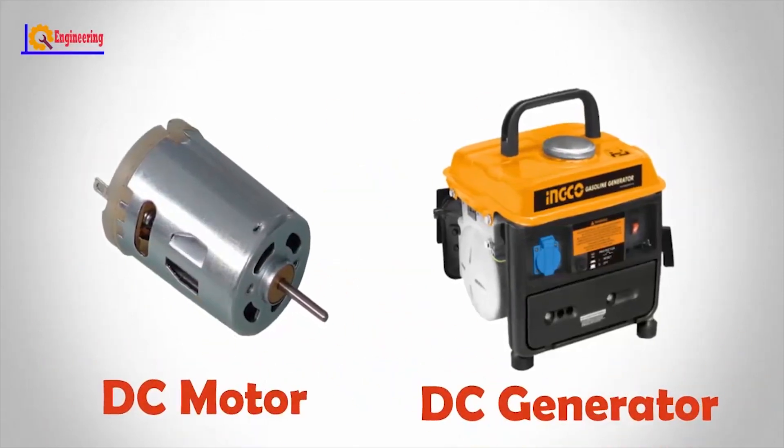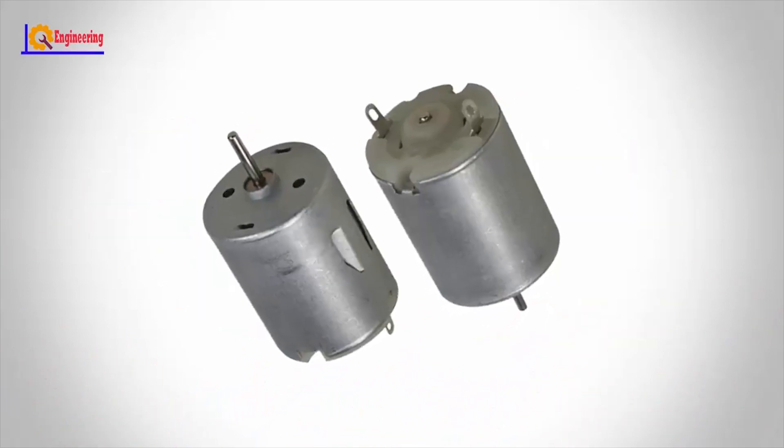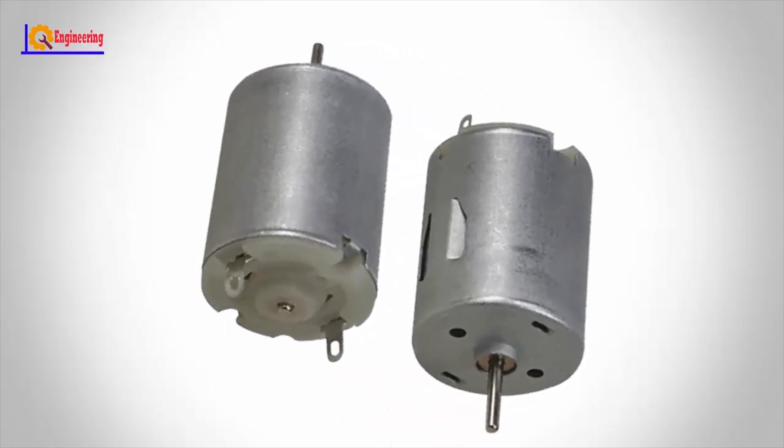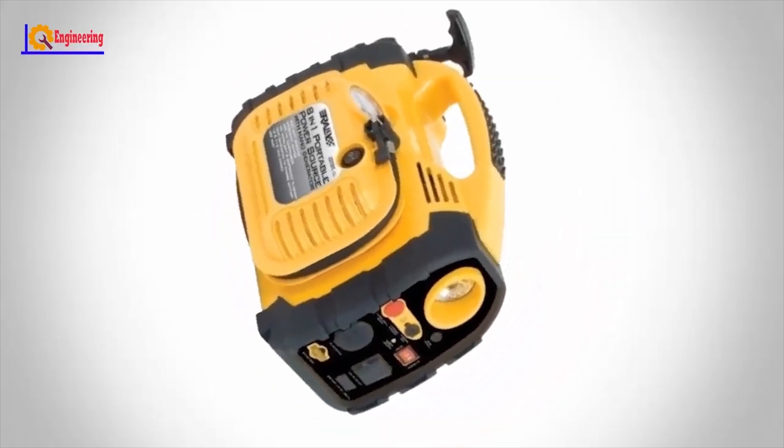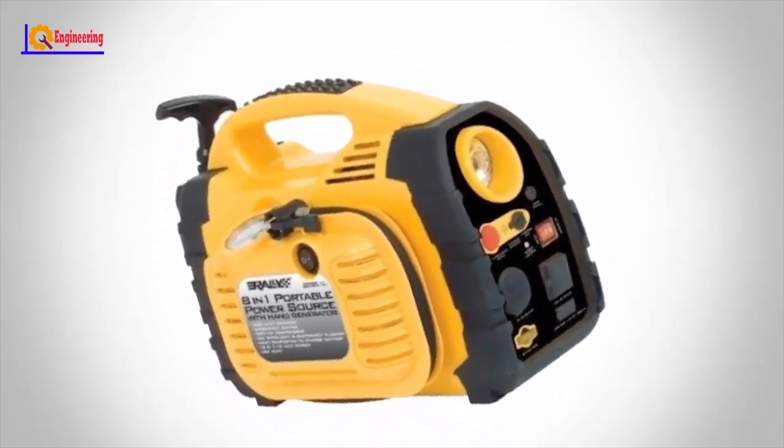Though they both perform their function on direct current supply, direct current motor supplies mechanical power by converting the direct current electrical power, whereas DC generator converts mechanical energy into direct current electricity.